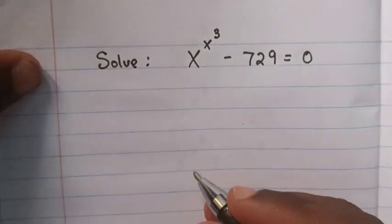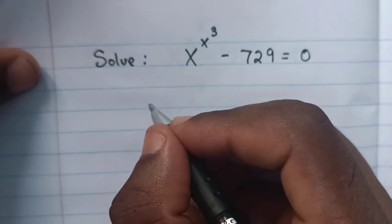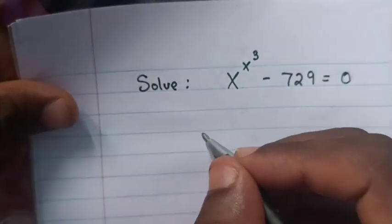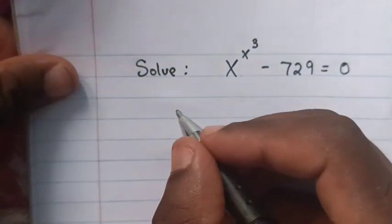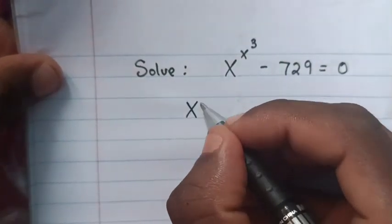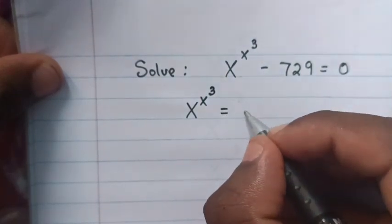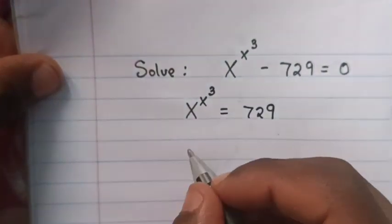Hello my friend, welcome to my channel. On this video we are going to solve for x from this exponential equation. So our equation will be x power x power 3 equals 729.